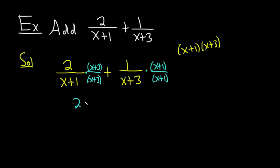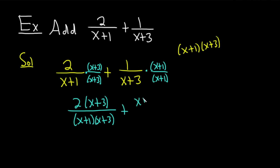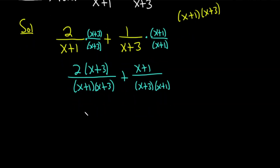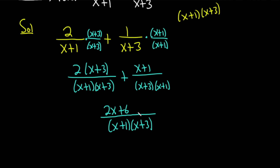This gives 2 times x plus 3 over x plus 1 times x plus 3, plus 1 times x plus 1 over x plus 3 times x plus 1. The denominators are the same — just written in reverse order, which is no big deal. So under the common denominator x plus 1 times x plus 3, we add the numerators: 2x plus 6 plus x plus 1, which combines to 3x plus 7. The result is 3x plus 7 over x plus 1 times x plus 3.